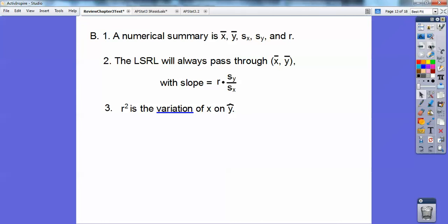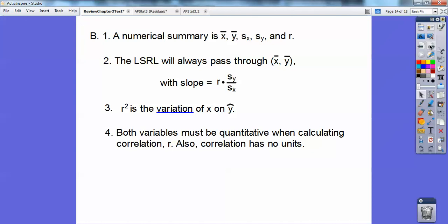So r squared represents the variation of x on y. So if you ever see the word variation, that's talking about r squared. Both variables must be quantitative when you're calculating your correlation. So I couldn't have like the position on a football player versus his height, because the position is not quantitative, it's categorical. They both got to be quantitative to be calculating your correlations.